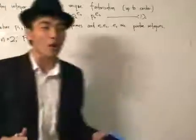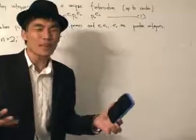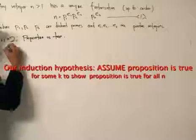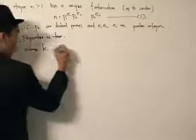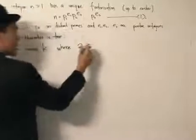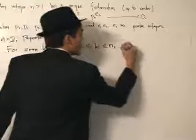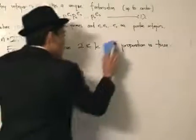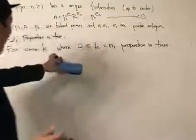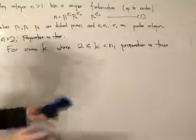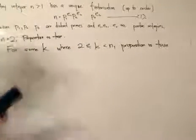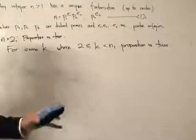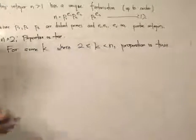For the next step, we're going to use what we call an induction hypothesis. The induction hypothesis means that for some k, where 2 is less than or equal to k, which is less than n, the proposition is true. Notice that I put k here because I have not proved the main proposition yet. I'm just using an induction hypothesis — we simply assume that the induction hypothesis is true.